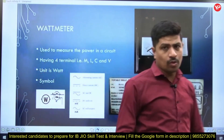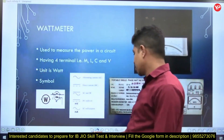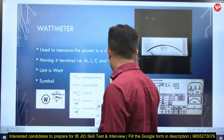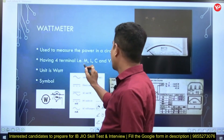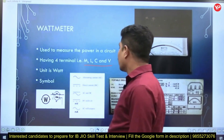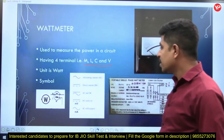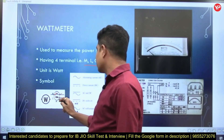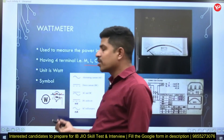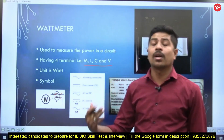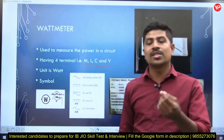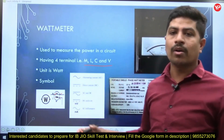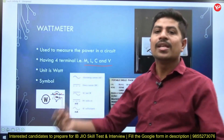The wattmeter has four connection terminals: M, L, C, and V. You need to know what is the pressure coil, what is the current coil, what each terminal M, L, C, and V represents, and how to make all the connections correctly.